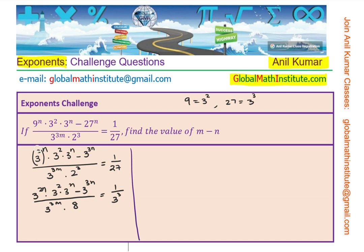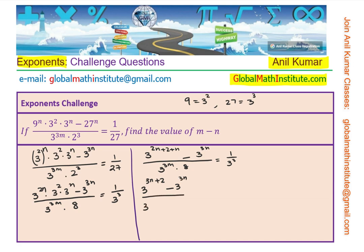Now in the numerator we can combine all the terms since the base is the same. The base is 3, so the exponent is 2n plus 2 plus n, minus 3 to the power of 3n, all over 3 to the power of 3m times 8, equals 1 over 3 cubed. That gives us 3 to the power of 3n plus 2, minus 3 to the power of 3n, over 3 to the power of 3m times 8, equals 1 over 3 cubed.